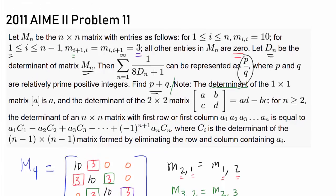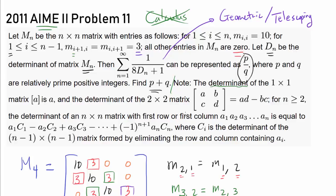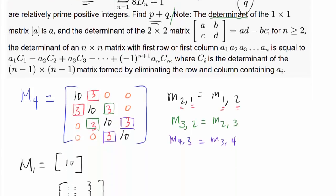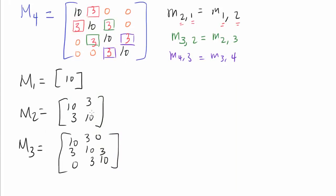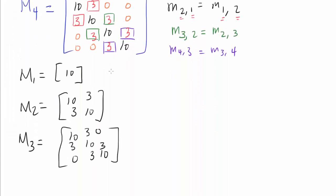That sum will be represented as p over q in simplified form, and we wish to find p plus q. Because none of the questions in AIME require calculus, we may conjecture that this infinite summation is probably geometric or telescoping. So one way of quickly finding the answer — not a formal way — is to experiment with M sub 1, M sub 2, and M sub 3, try to find some pattern, either geometric or telescoping, and use that to finish the problem. Of course, we are going to be formal and justify why the pattern extends. But for exploration, let's try finding the determinants of matrices 1, 2, and 3.